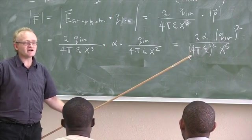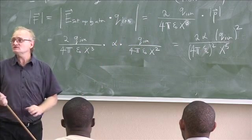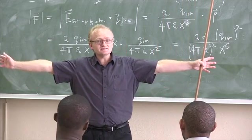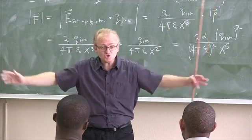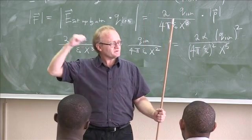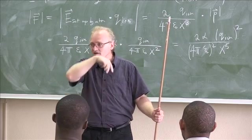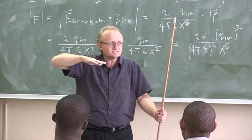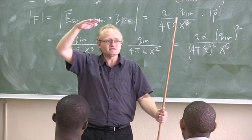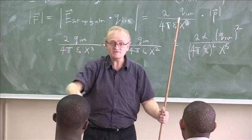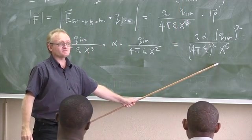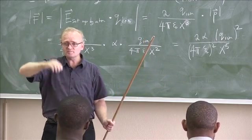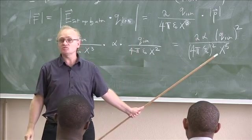That 1 over x to the 5 is very typical for induced forces. It means the force falls off very quickly at long distances, but picks up very rapidly at short distances. When you rub a pen and try to pick up a piece of paper, the paper just sits there, and then all of a sudden it jumps up — very suddenly. The reason is you're probing 1 over x to the 5 at small x, and that changes very rapidly.